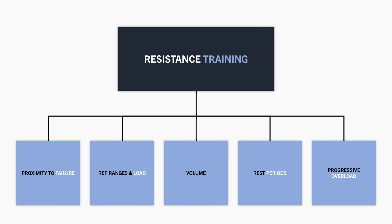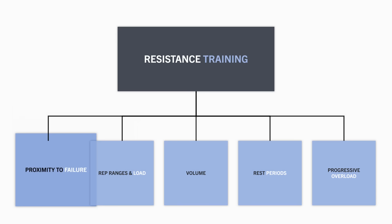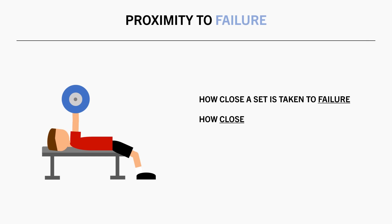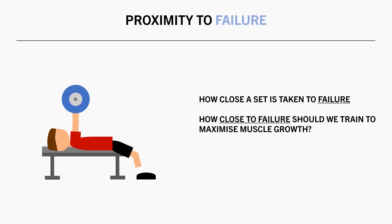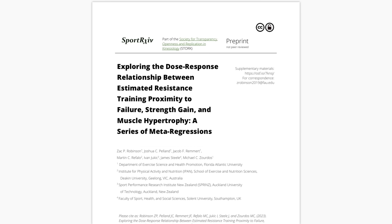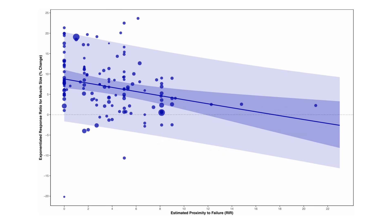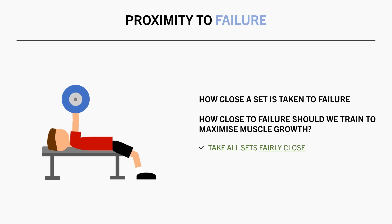Resistance training is going to be our number one priority for muscle growth. Let's go into more detail on how to train to achieve the greatest hypertrophic stimulus. The first variable to discuss is proximity to failure — in other words, how close a set is taken to the point of failure. This meta-regression analysed the effects of proximity to failure on muscle growth, and found that greater gains are generally observed when training with fewer reps in reserve — that is, when training closer to failure. As a practical recommendation, we want to leave no more than around 3 reps in reserve to maximise the hypertrophic stimulus of each set.